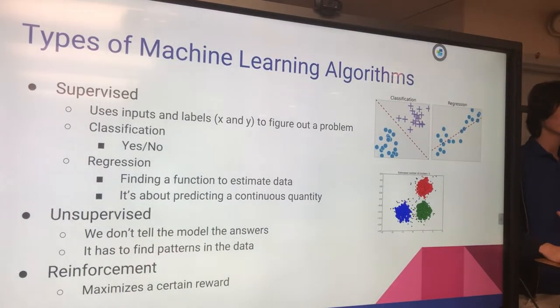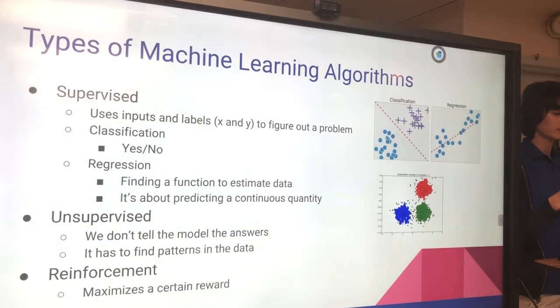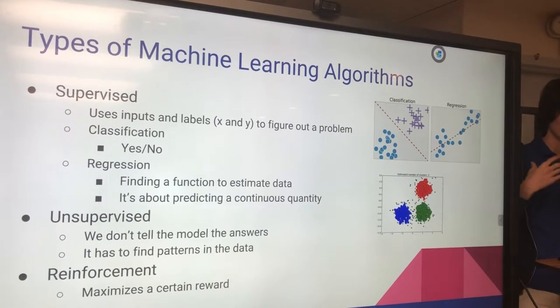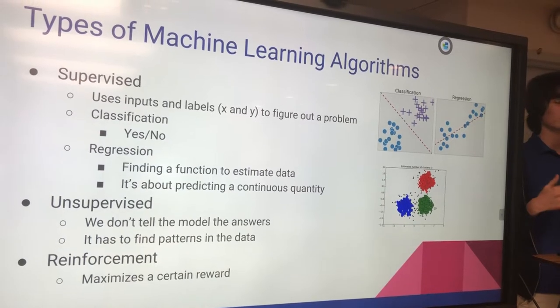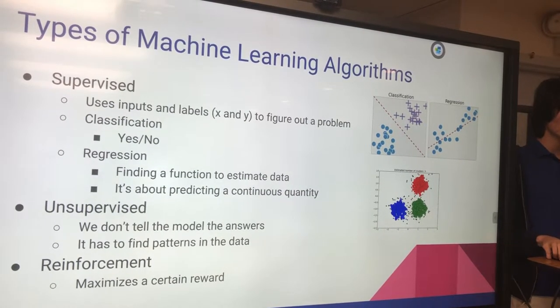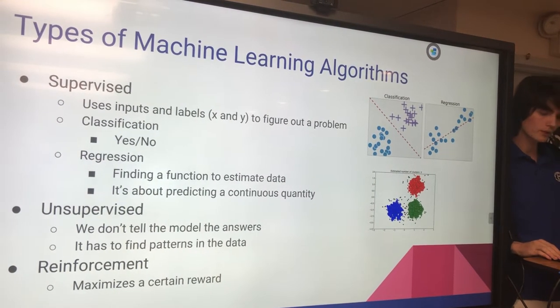Unsupervised is when we don't tell the model the answers. Supervised, remember we told it to train it. We say no, you're wrong, this is actually what it is. Unsupervised, we don't give the model the answers. It has to find it in the data. It has to find patterns. And reinforcement, it maximizes a certain type of reward. I'll get into reinforcement in just a bit.